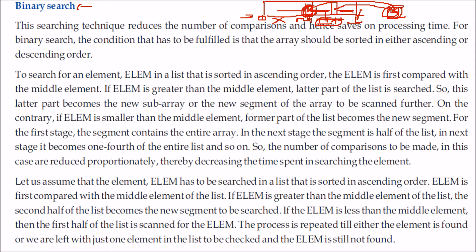This process goes on recursively. Every time you search, the number of elements becomes half. So every time you search, the complexity will be only O(log base 2 of n). This searching technique reduces the number of comparisons and saves processing time.